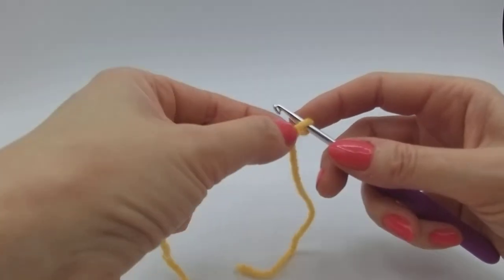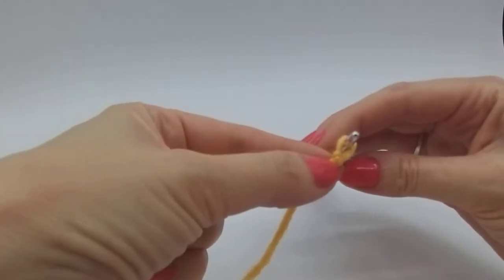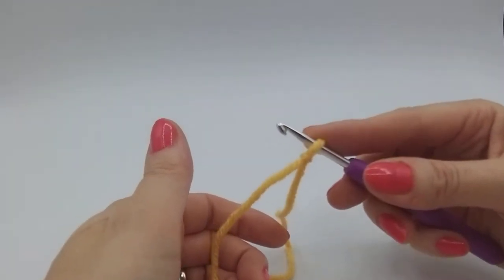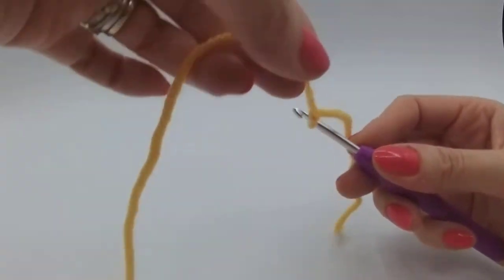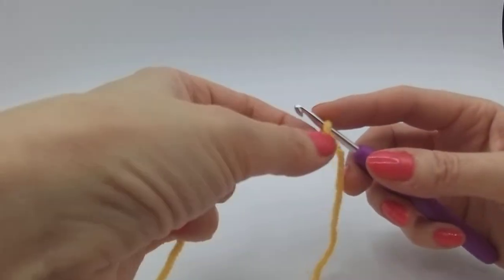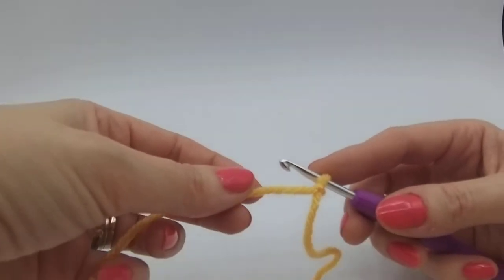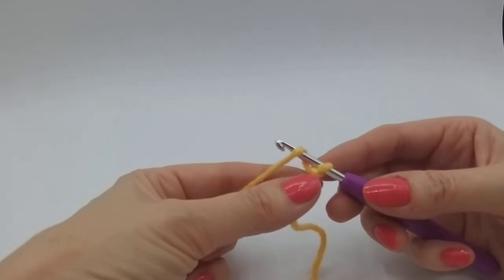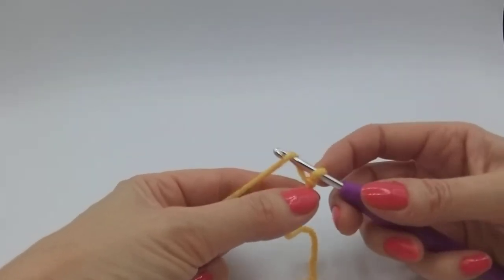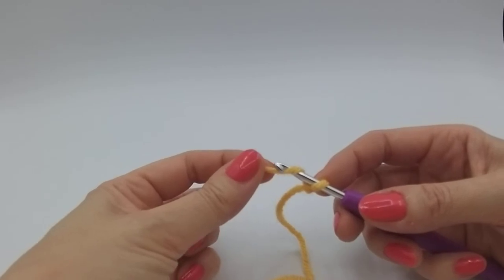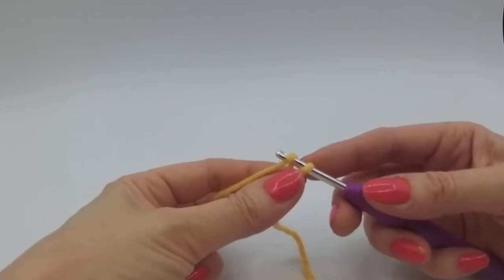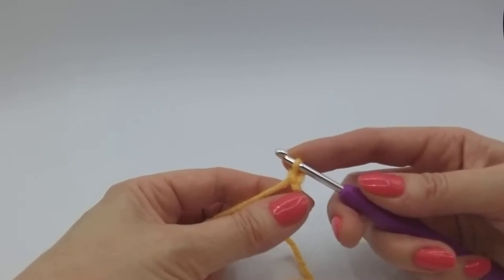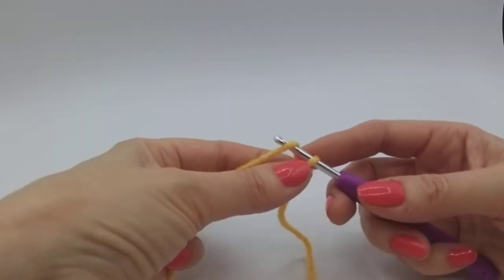We can alter the slipknot so we can pull it to make it bigger or smaller. We want it just sitting comfortably on our crochet hook. We don't want it tight, that'll make it too difficult to work. Pop your finger on the loop just to keep it steady. We're going to start our chain. To chain, we wrap the wool around the back of the hook once and then grab it, use that as a tool, it is a hook. That's one chain, simple as that.